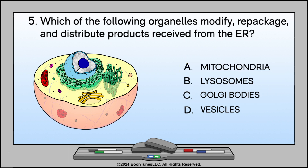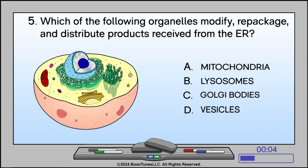Which of the following organelles modify, repackage, and distribute products received from the ER? A. Mitochondria, B. Lysosomes, C. Golgi bodies, or D. Vesicles? The answer is C. Golgi bodies.